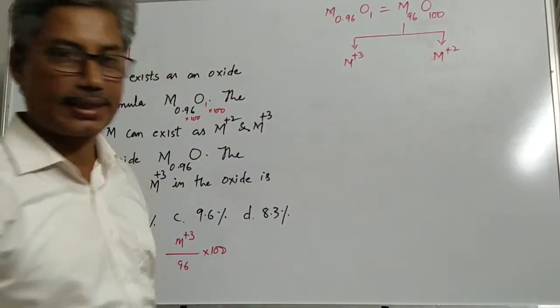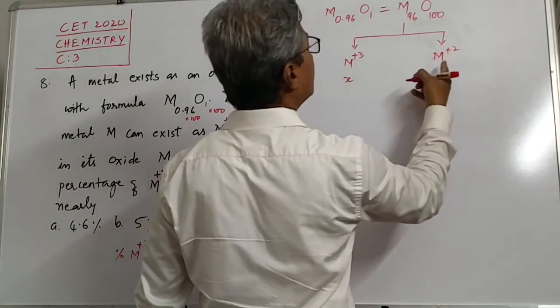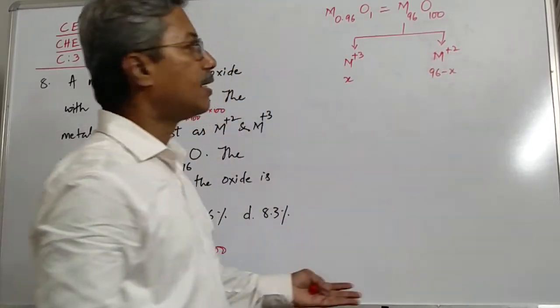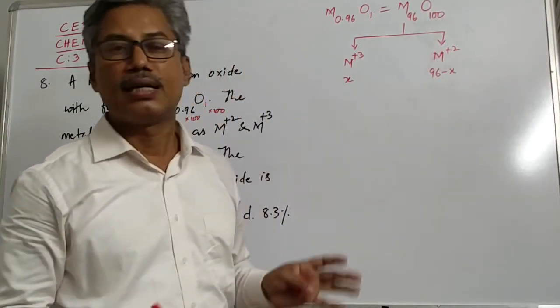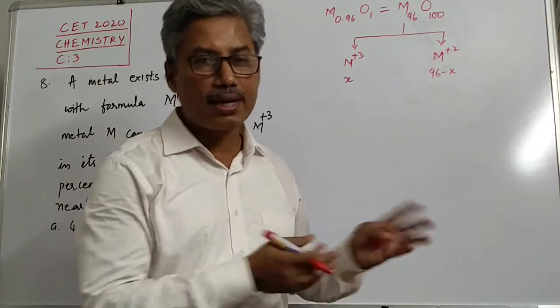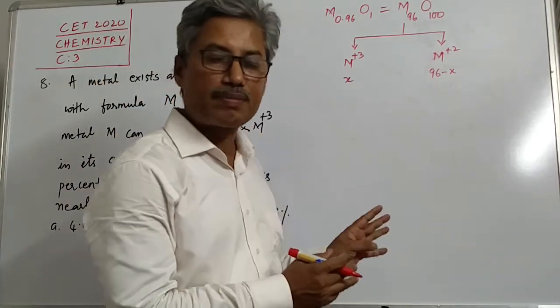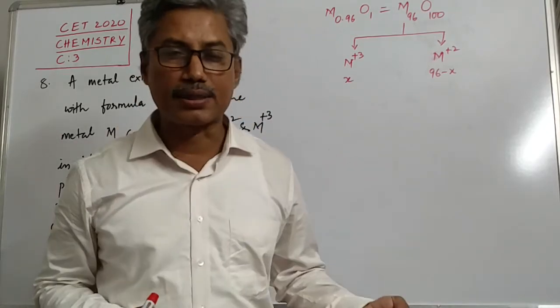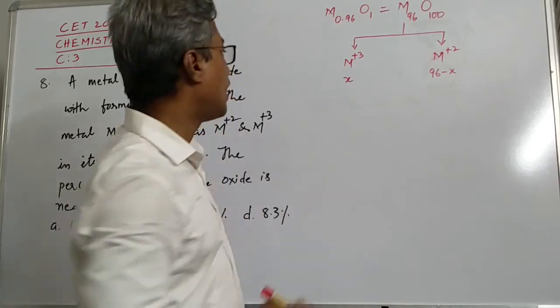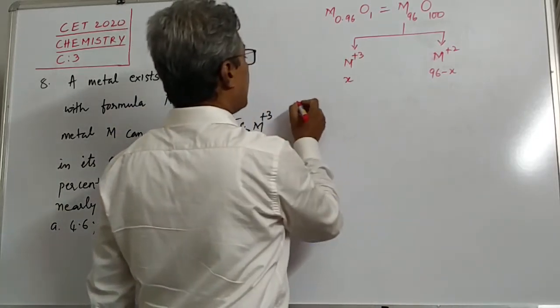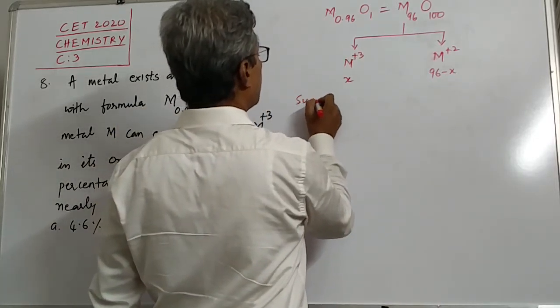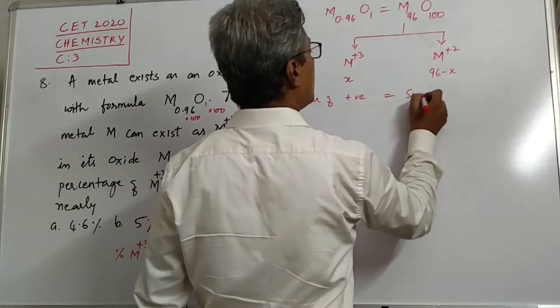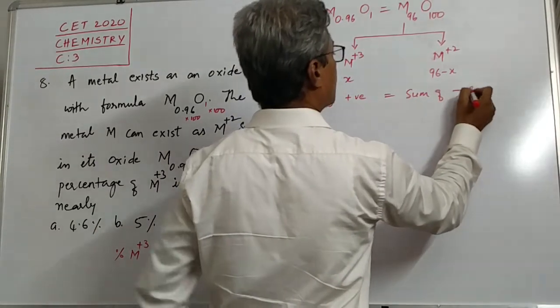So we do not know how many M plus 3 are there, so let it be X and then it will be 96 minus X. Then the simple formula is sum of the positive charges must be equal to sum of the negative charges. I repeat, sum of the positive charges must be equal to sum of the negative charges. Positive charges are of metal and negative charges are of oxygen.